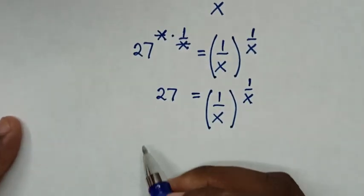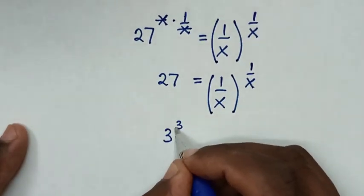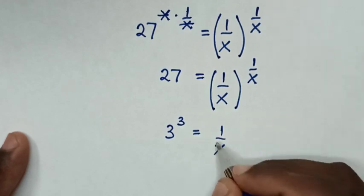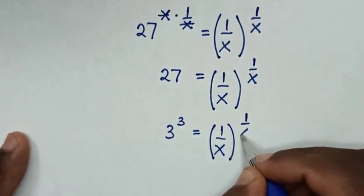In the next step, 27 is the same as 3 to the power of 3, which equals 1 over x in brackets to the power of 1 over x.